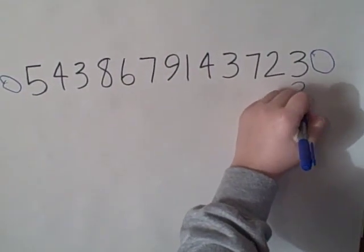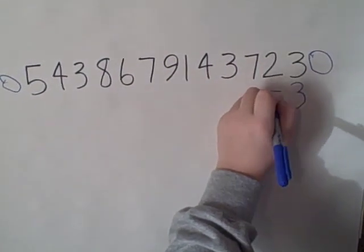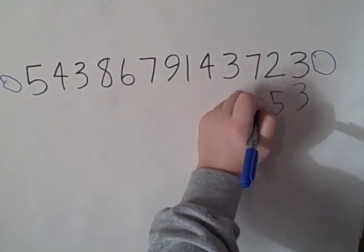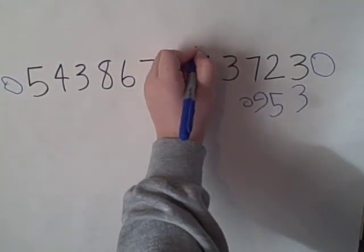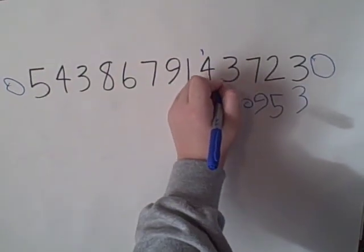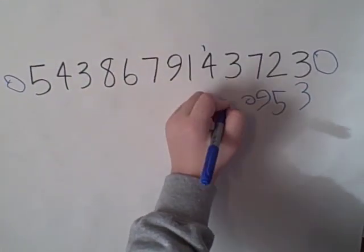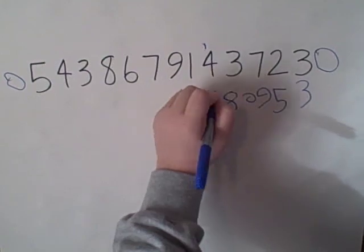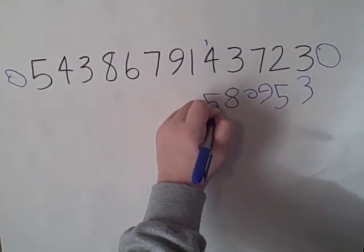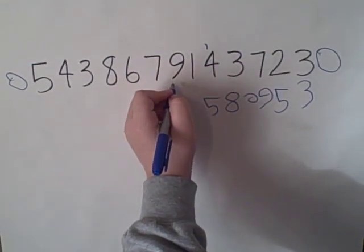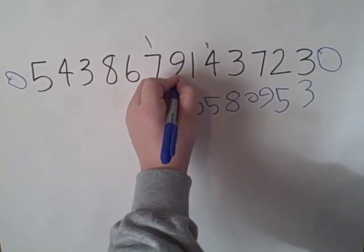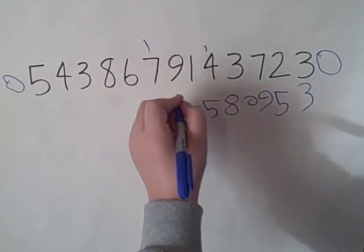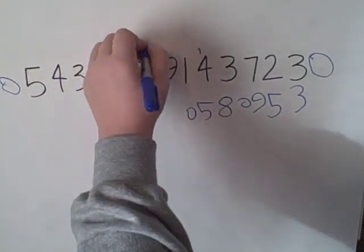I want to put your 0s here like you did last time. 0 plus 3 is 3. 3 plus 2 is 5. 2 plus 7, 9. 7 plus 3, 0. 1 up here. 3 plus 4, 7. Add your 1 there, 8. 4 plus 1, 5. 1 plus 9, 10. Put your thing up there, 0 here.